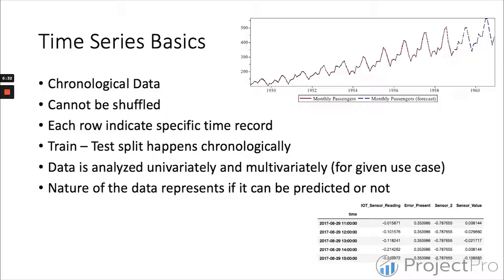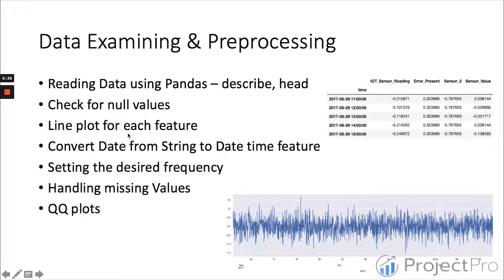There are some basic operations that we apply in time series. Reading the data using Pandas which is a great library for data frames. Describe and head are methods used - describe gives us the descriptive statistical data like mean, standard deviation, maximum, minimum. Head shows the top five values. Check for null values because the data is chronological and supposed to be sequential, so we have to deal with null values immediately.